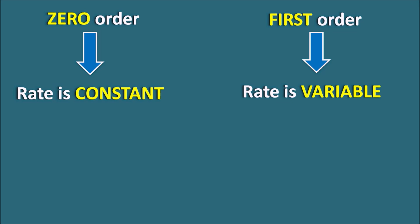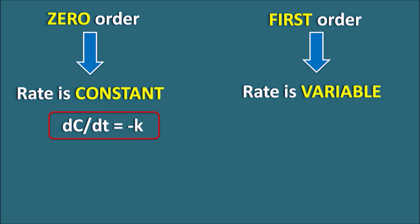If we write the rate equation in zero order, dc/dt is equal to minus k, where k is the zero order rate constant, so the rate of reaction is constant. But in first order the rate equation is dc/dt equals minus k times c, where the rate of reaction is directly proportional to the concentration of the substrate.